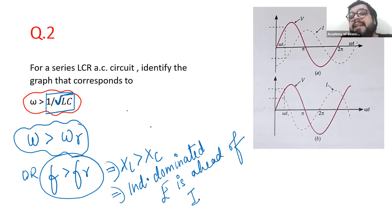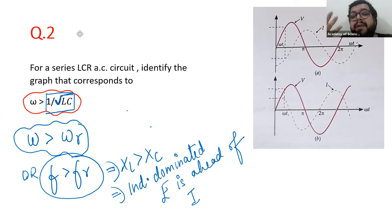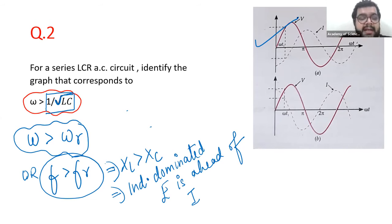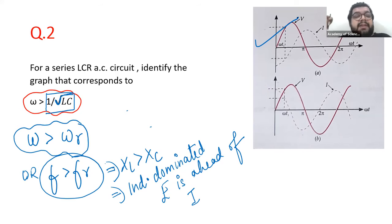Please check in your diagram — in which diagram does voltage appear to be leading and current is lagging? The answer is Option A. Option A clearly shows that voltage is ahead and current is lagging behind. Students, is this question clear?